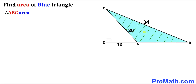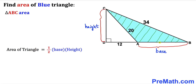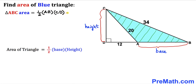Here's our first step. Since we are interested in finding the area of the blue shaded triangle ABC, let's recall the area of a triangle formula: area equals one-half times base times height. In our case, AB is our base and CD is our height. So the area of triangle ABC is going to be one-half times AB times CD. Let me call this Equation 1.